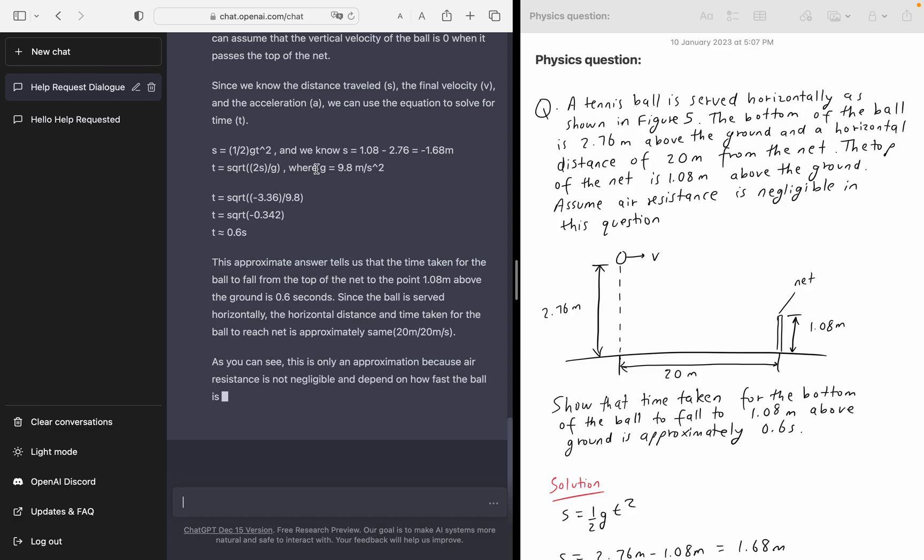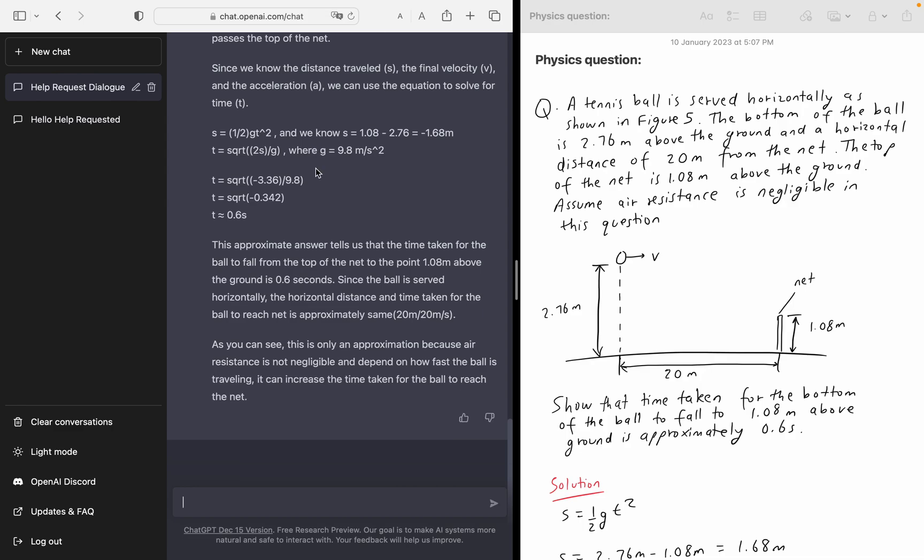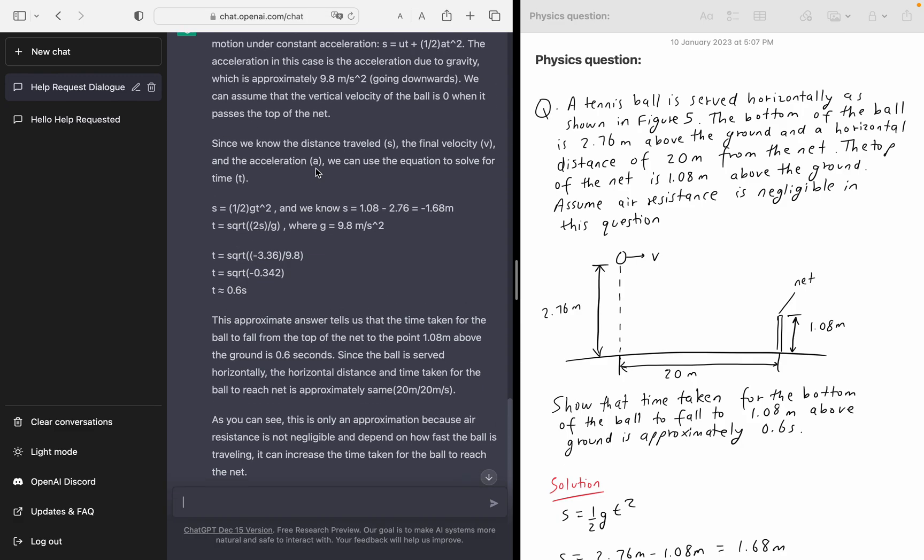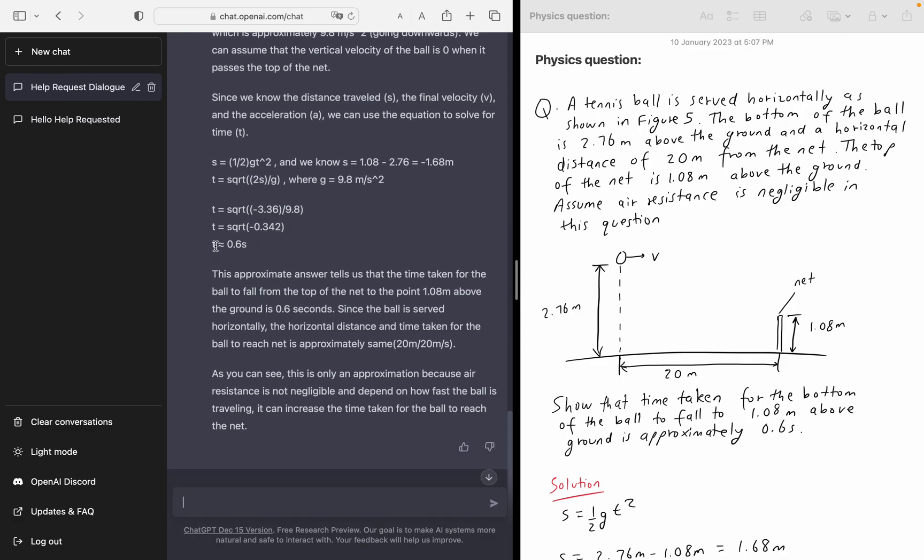Okay, pretty good actually. The time is the square root of 2s divided by g, where g is equivalent to 9.8 meters per second. So it's doing a pretty good job. Okay, we can see that the time shown here is equivalent to the square root of negative.